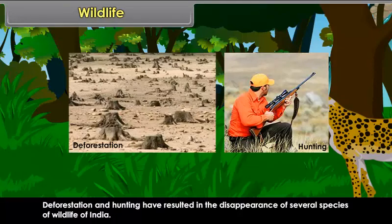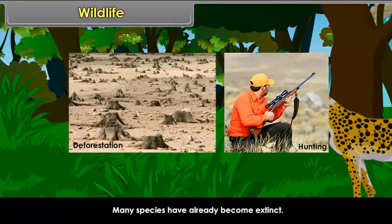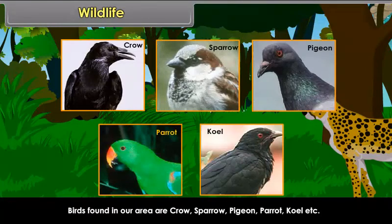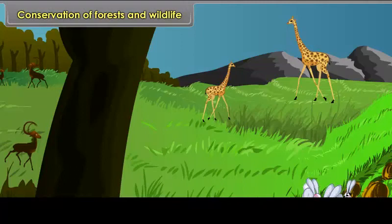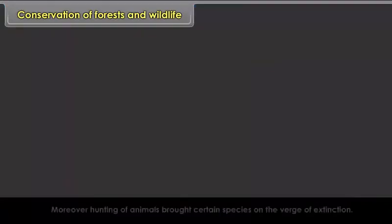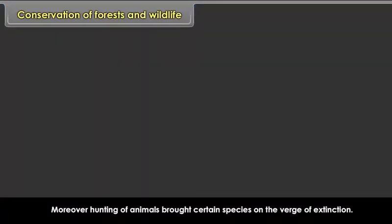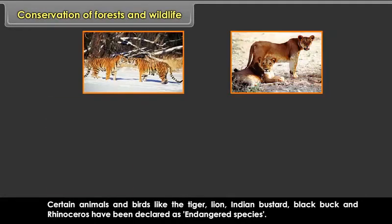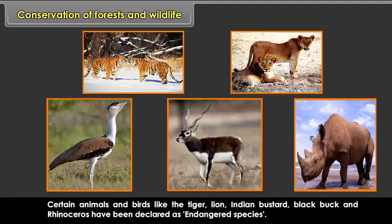Deforestation and hunting have resulted in the disappearance of several species of wildlife in India. Many species have already become extinct. With the depletion of forest cover, wildlife gets affected. Forests are the homes of wildlife and exploitation of it disturbs their habitats. Hunting of animals has brought certain species to the verge of extinction. Certain animals and birds like the tiger, lion, Indian bustard, black buck and rhinoceros have been declared as endangered species.